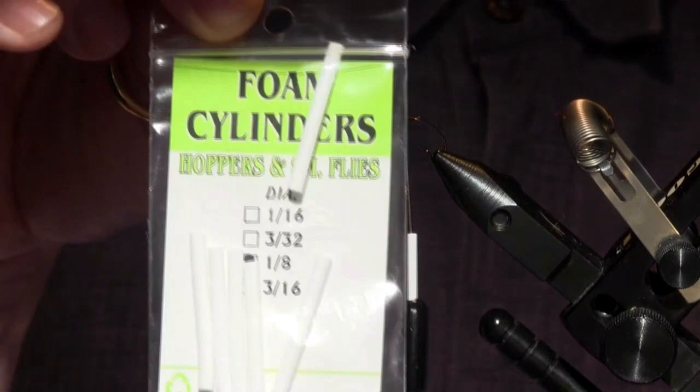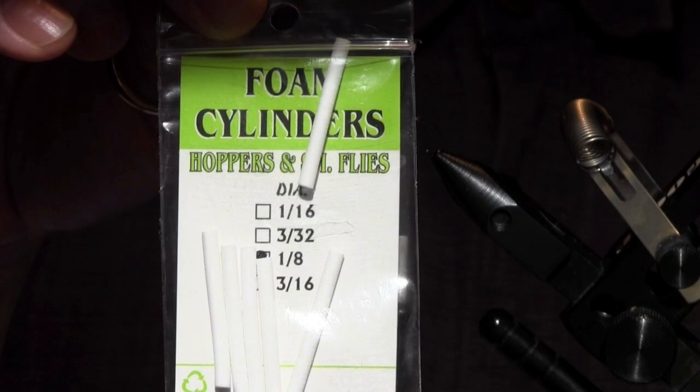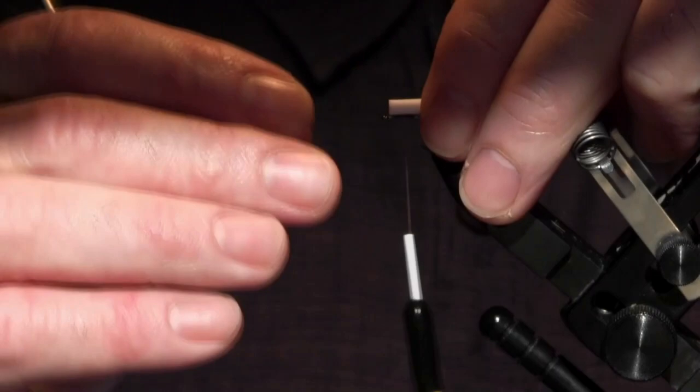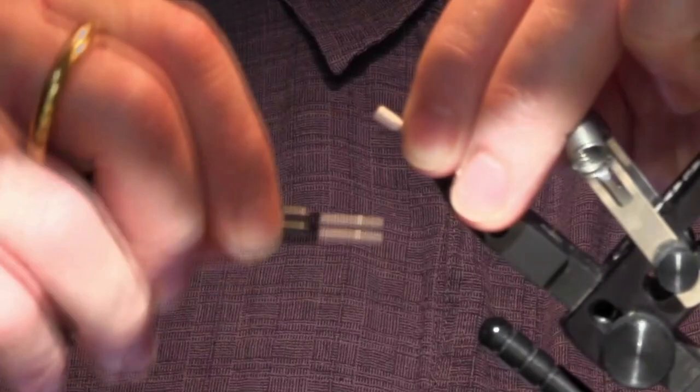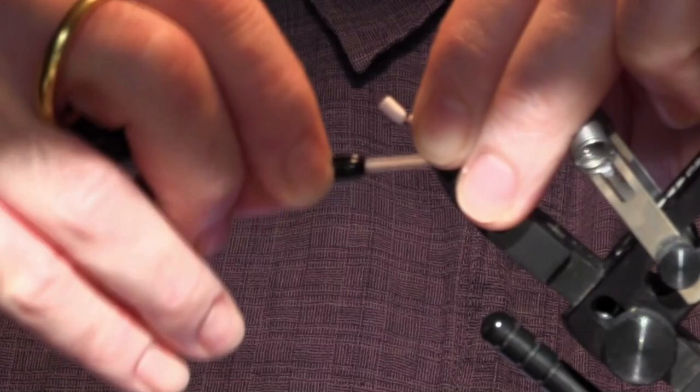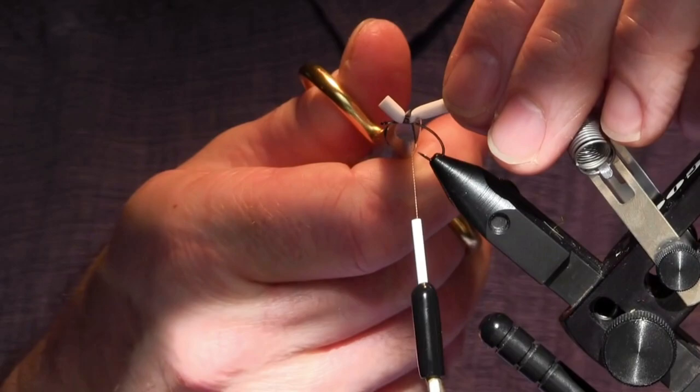We're gonna use a foam cylinder for the wing post, size 1/8 diameter for the size 12 hook. I'm gonna make that post just about the length of the top of that wrap to the hook eye. I'm gonna put it on top with three stern wraps and then work my thread back towards the hook bend, again creating an even underbody. I'm trying to trap some more foam in that thorax to make this fly a little more buoyant.